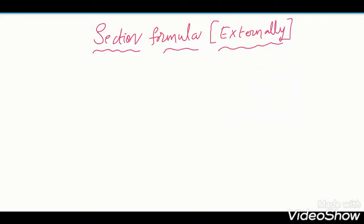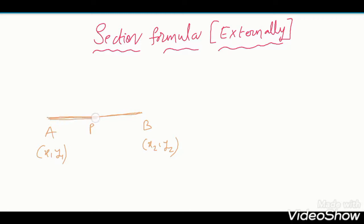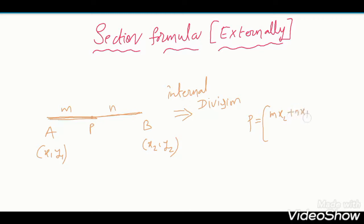What is section formula internally? We have a line segment AB, A is (x1, y1), B is (x2, y2). P dividing internally means P lies inside, i.e., in between AB. Then it is called internal division in the ratio m:n, and the formula is (mx2 + nx1)/(m+n) comma (my2 + ny1)/(m+n).